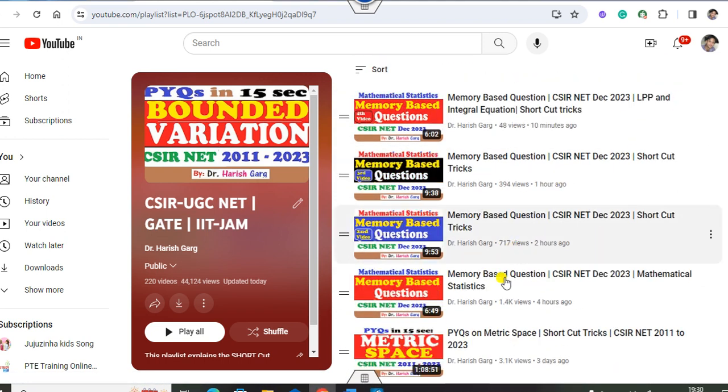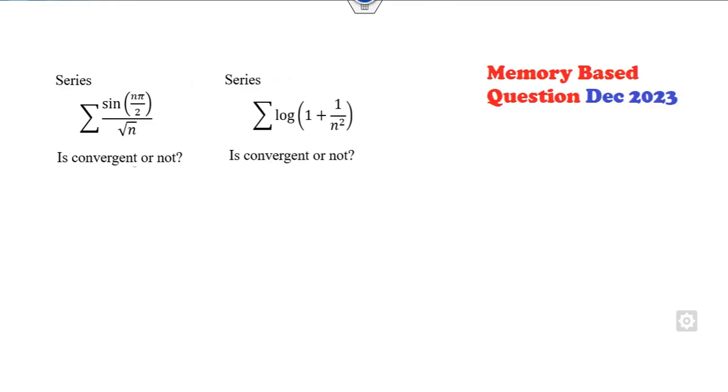Apart from them, you can see other previous year questions topic-wise in this playlist. So let's start with this video. The question is: which one of these is convergent? Only Series I, both I and II, only Series II, or neither?